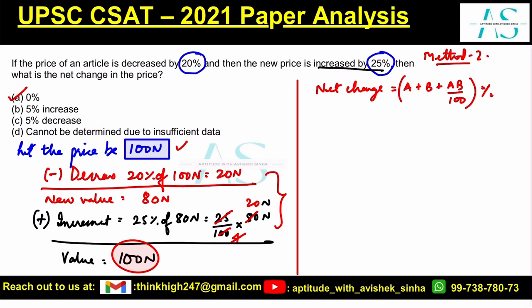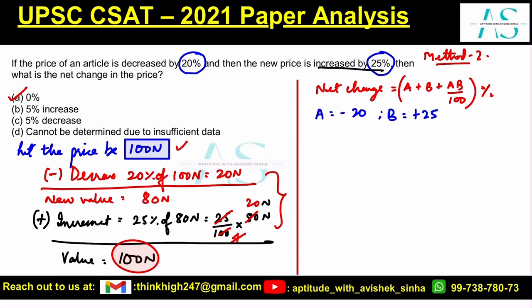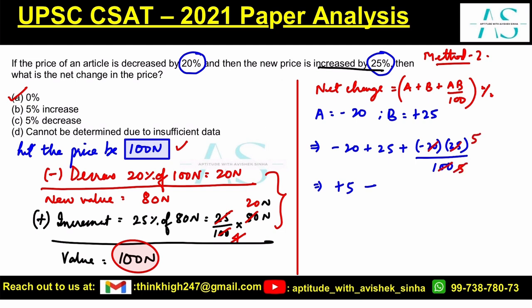You have to be careful about the signs. If the value represents a decrement, use a minus sign; if it is a loss, use a minus sign; if it is a discount, use a minus sign. So here, a = −20 and b = +25. Net change = −20 + 25 + (−20 × 25)/100 = +5 − 5 = 0 percent. No change — the same result as Method 1.